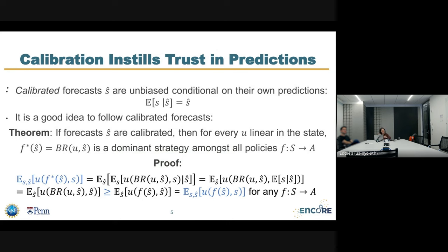Eventually, in the third expression, you can see that we're looking at the expected utility with the expectation of s given ŝ plugged in, which by definition of calibration is exactly ŝ itself. At this point, we have a utility function where from its point of view the true state is in fact ŝ, and the action chosen is a best response under this utility function to ŝ. So this must give a better utility value than following any other policy that's a function of ŝ — by definition of calibration.